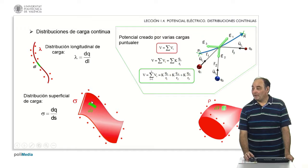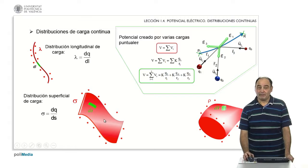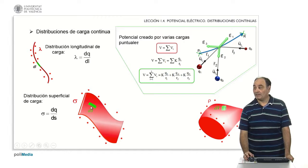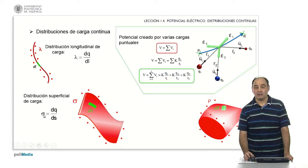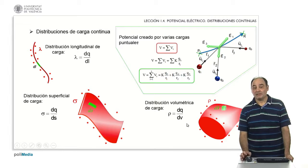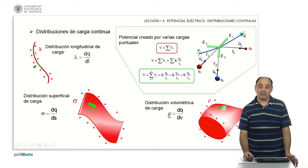In the case of a surface distribution, it is all equivalent, only that the charge is distributed on a surface. What we do is take a piece of surface with an infinitesimal differential area, and the quotient between the tiny charge and the tiny area is what we call the surface charge density, σ, which is measured in coulombs per square meter. Equivalently, for volumetric distributions what we would have is small volumes with infinitesimal charge. The quotient between small charge and small volume is what we call volumetric charge density, ρ, coulombs per cubic meter.